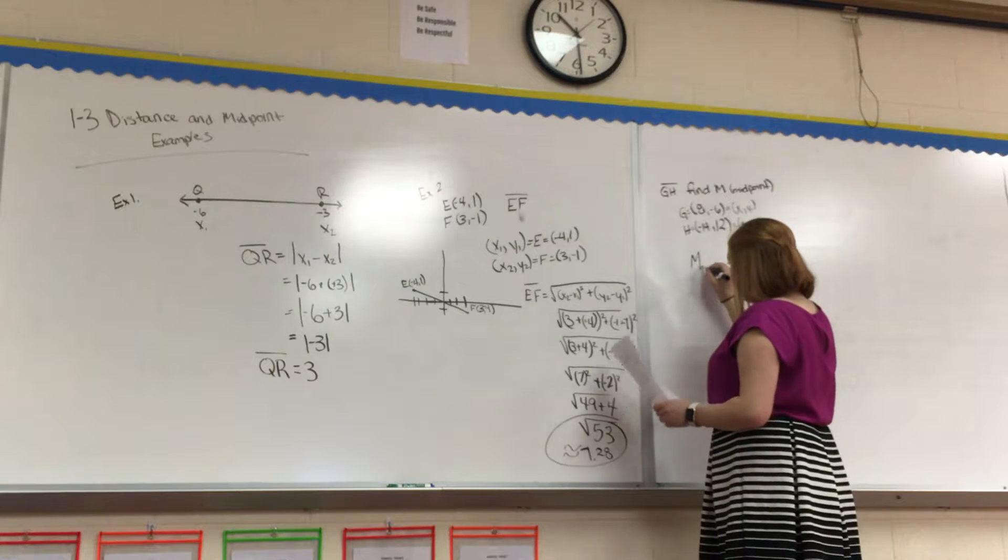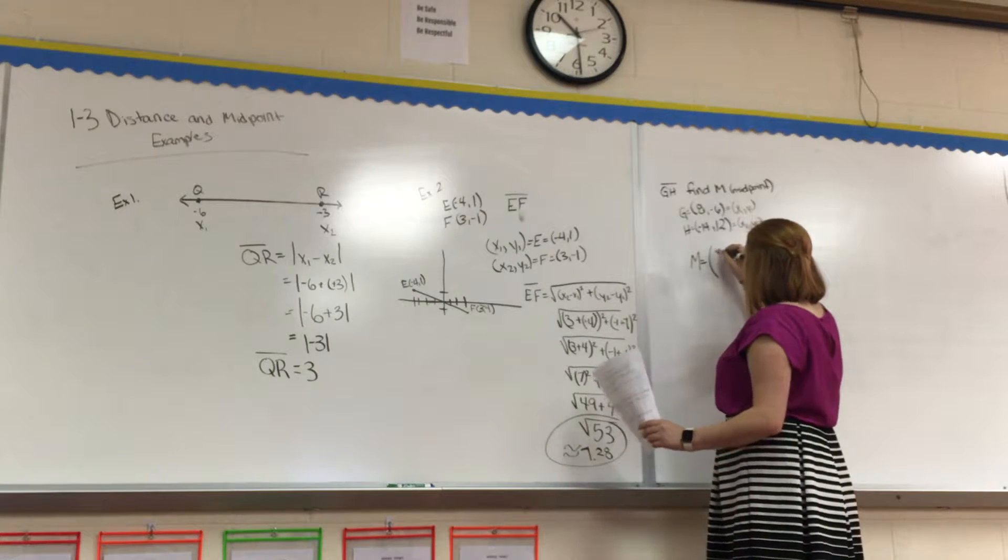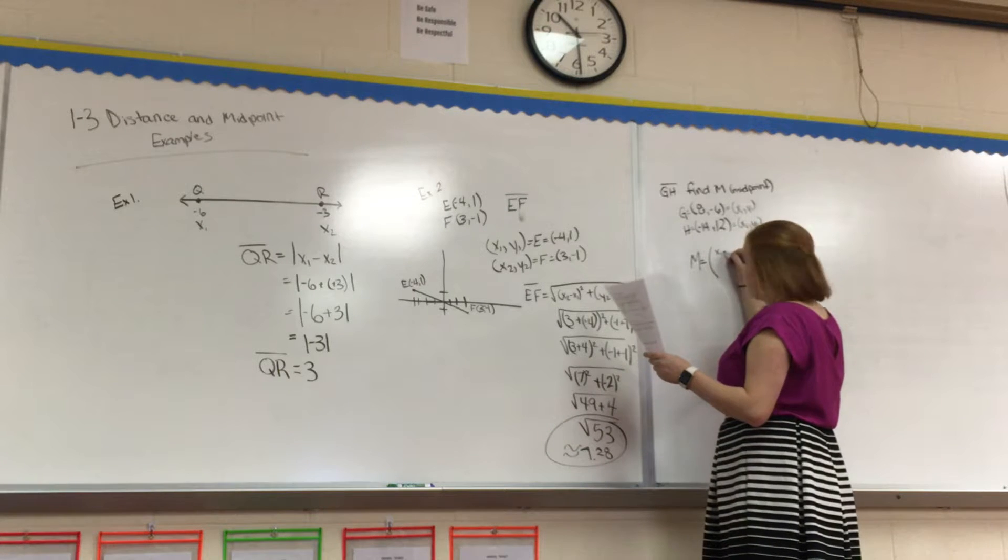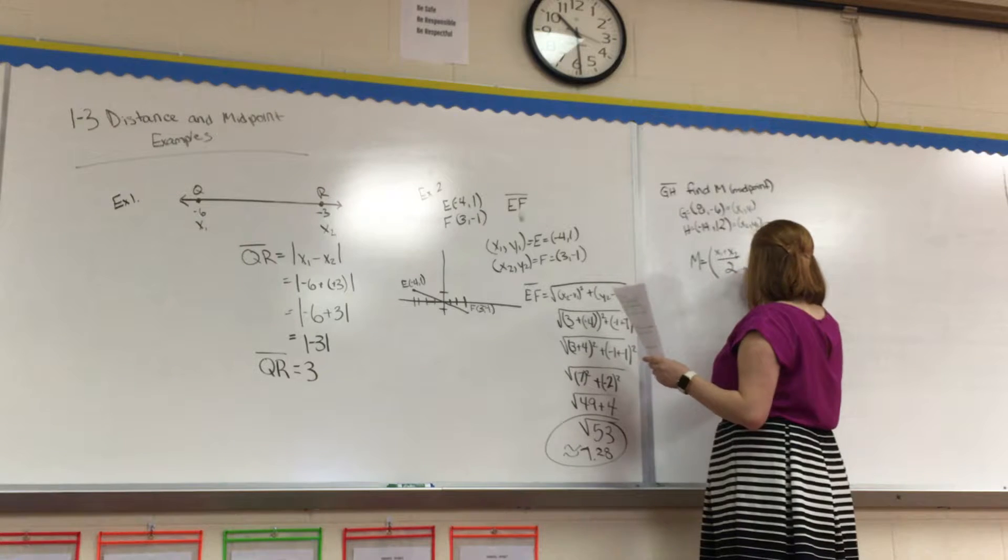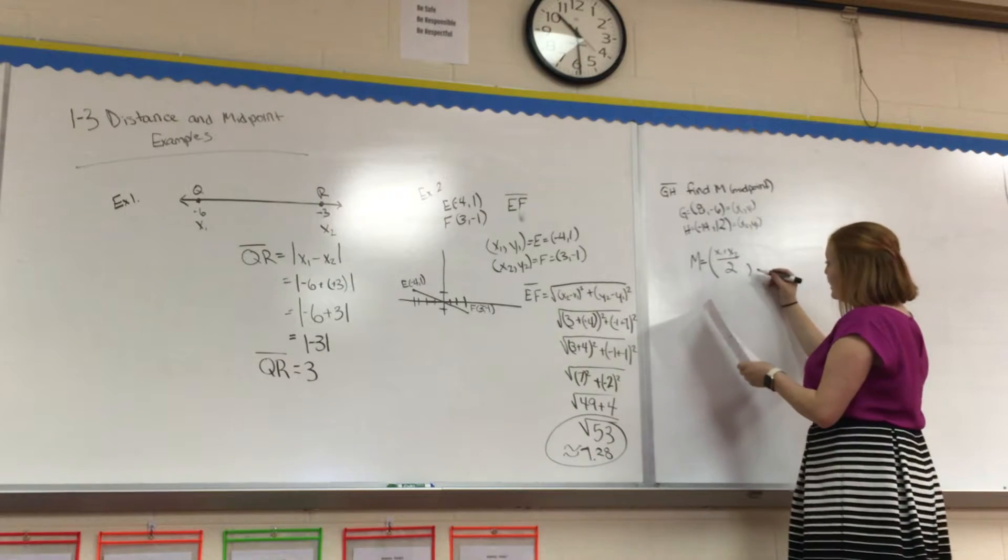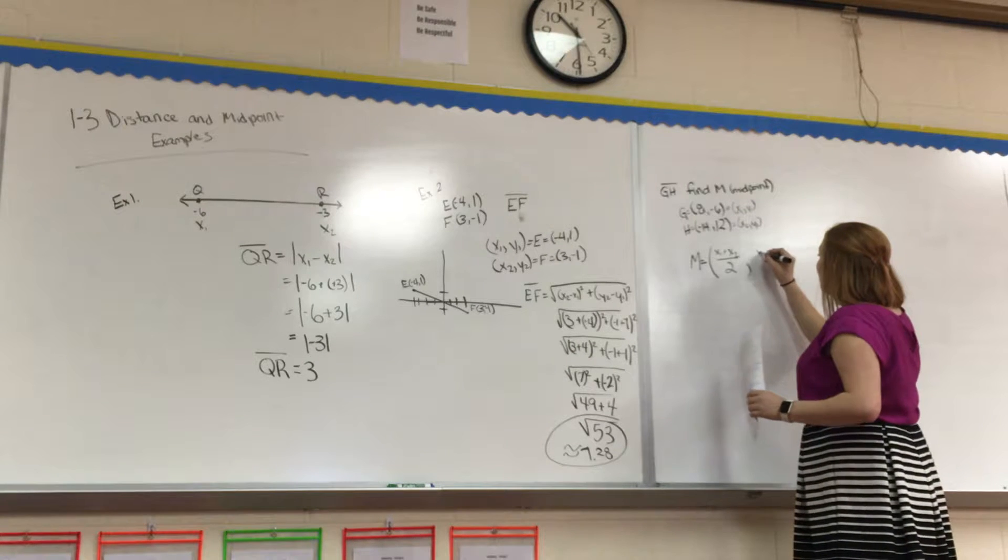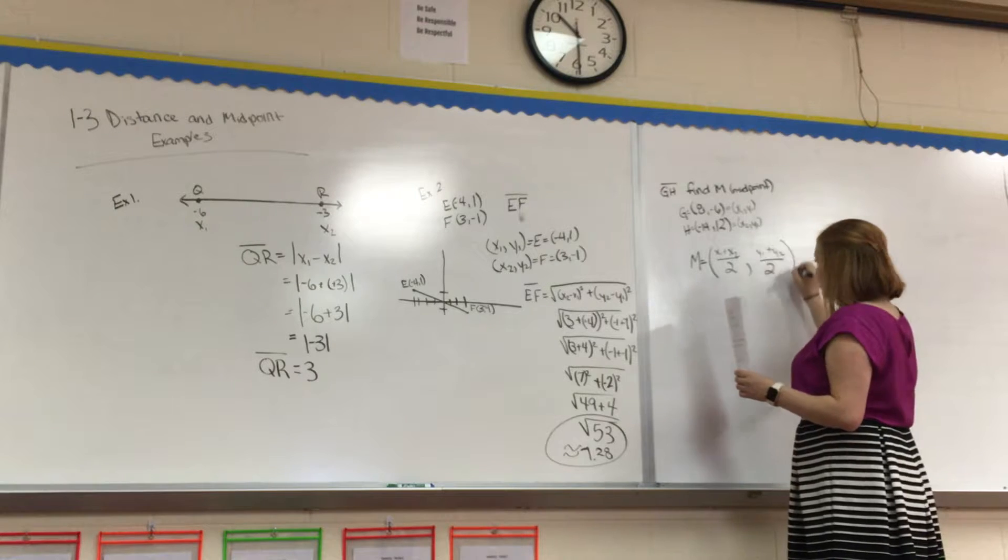Does anyone remember what our midpoint formula is? Our midpoint formula, I'm going to write it up here. So, M equals, big parentheses, X1 plus X2 divided by 2, comma, we're looking for an ordered pair for the midpoint. So, that's why you have the comma, Y1 plus Y2 divided by 2.